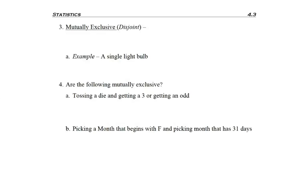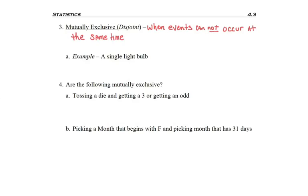When picking a single event and looking to see if it satisfies more than one condition, we need to define mutually exclusive — sometimes also called disjoint. The formal definition is when events cannot occur at the same time. For example, living in Lakewood and Long Beach can't happen at the same time, and a single light bulb cannot be on and off at the same time. Those two events are mutually exclusive.